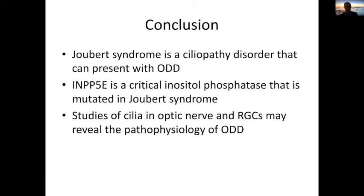In conclusion: first, Joubert syndrome is a ciliopathy that presents with optic disc drusen — not the most common phenotype but reported at a higher rate than in the general population. Second, INPP5E is a critical inositol phosphatase mutated in Joubert syndrome, and gene replacement may represent a rescue strategy. Third, studying the role of cilia in optic nerves and retinal ganglion cells may illuminate how this affects optic nerve function and perhaps optic disc drusen development.